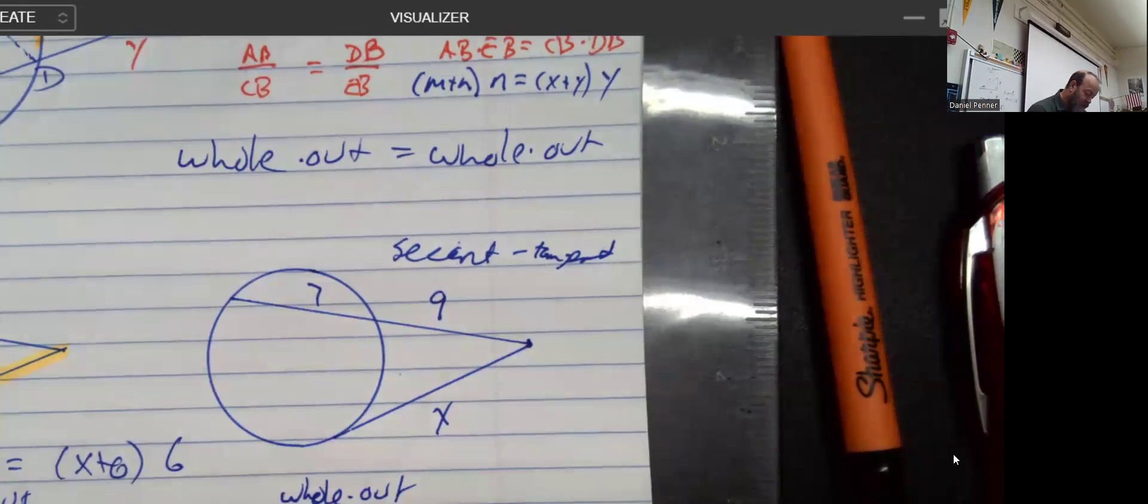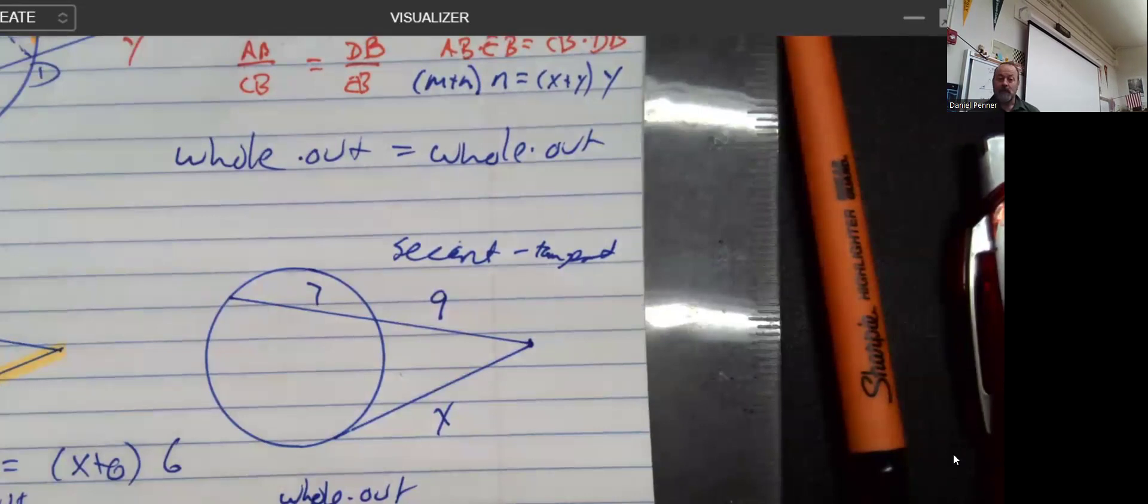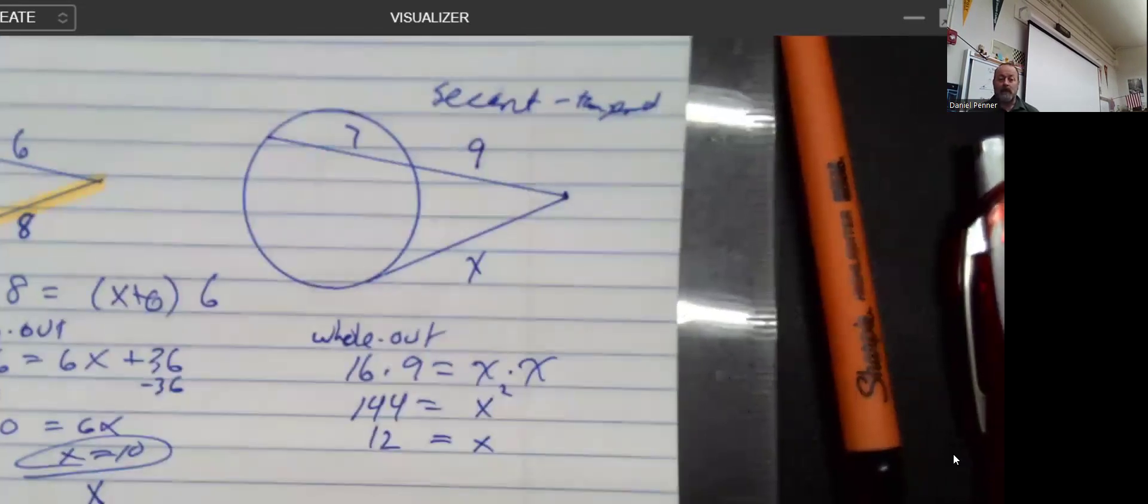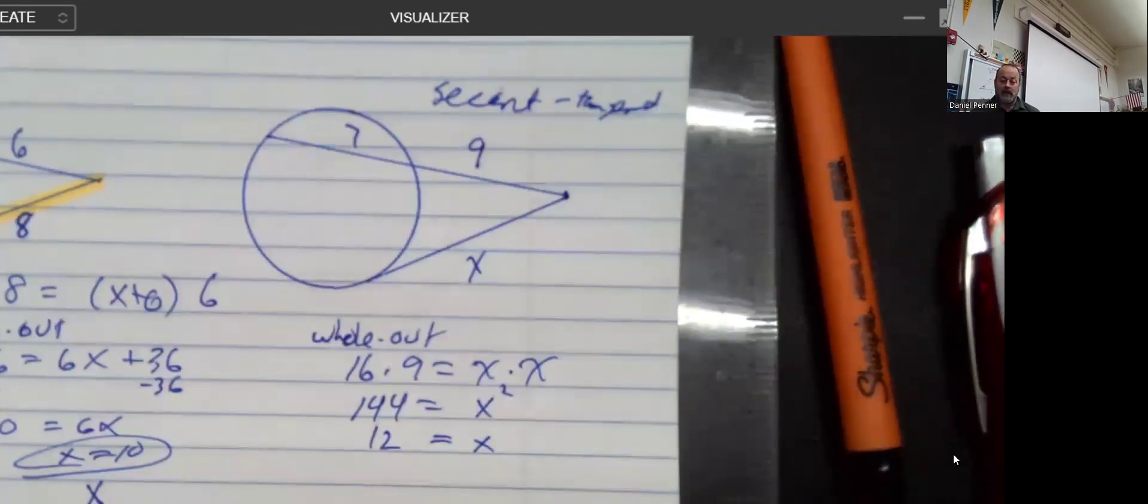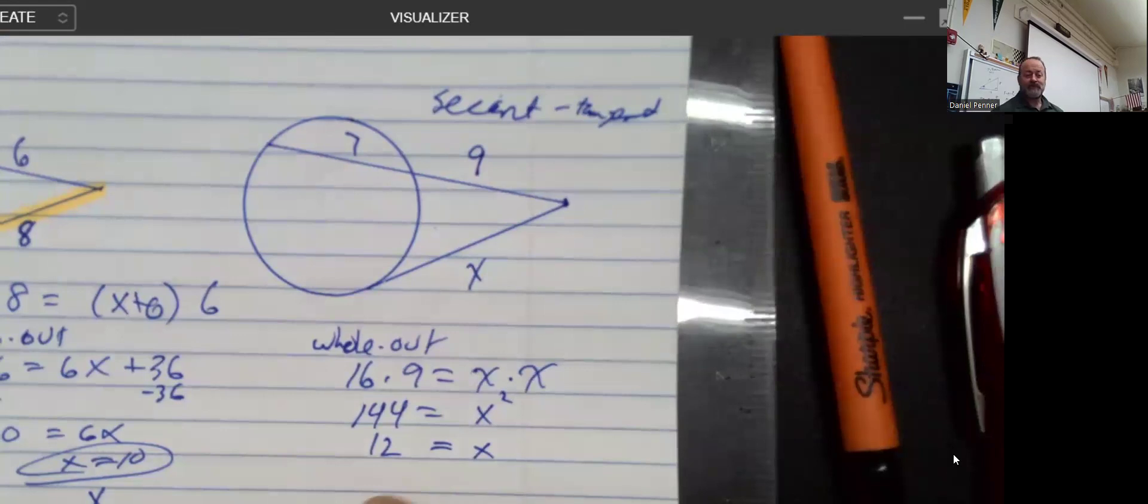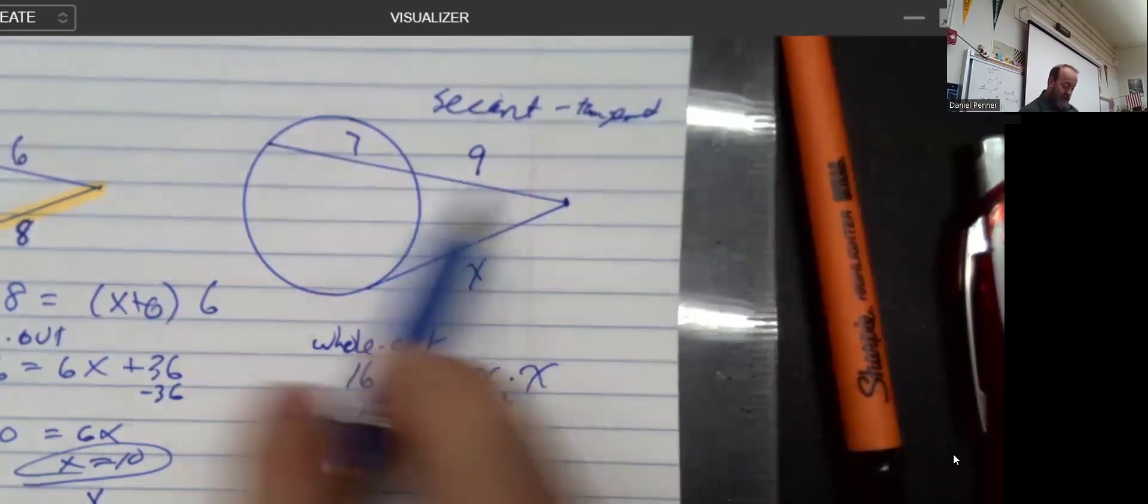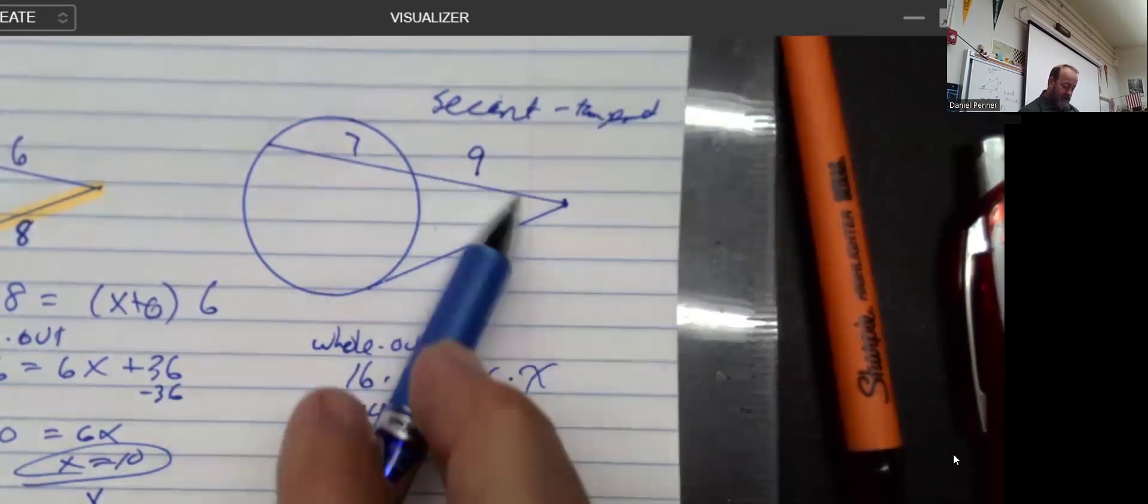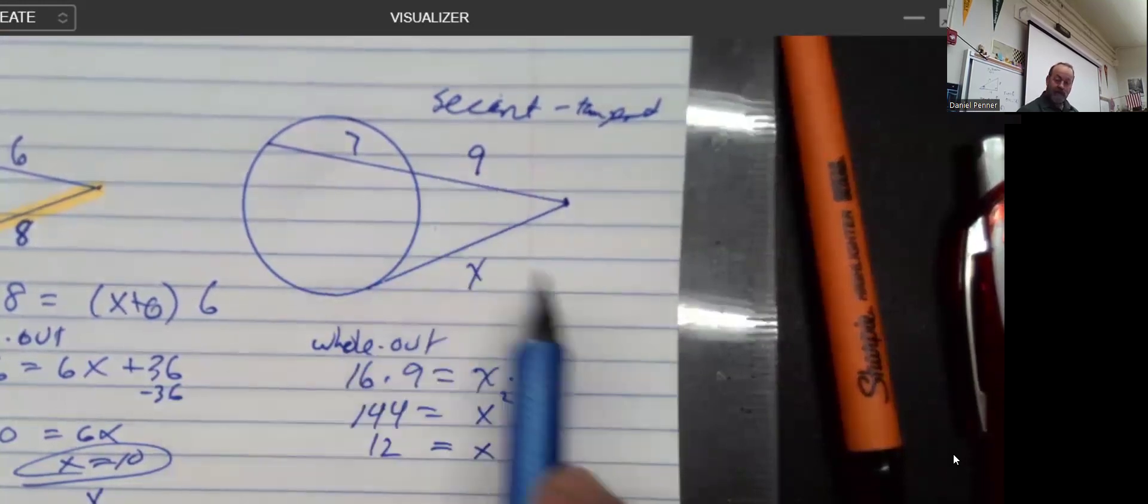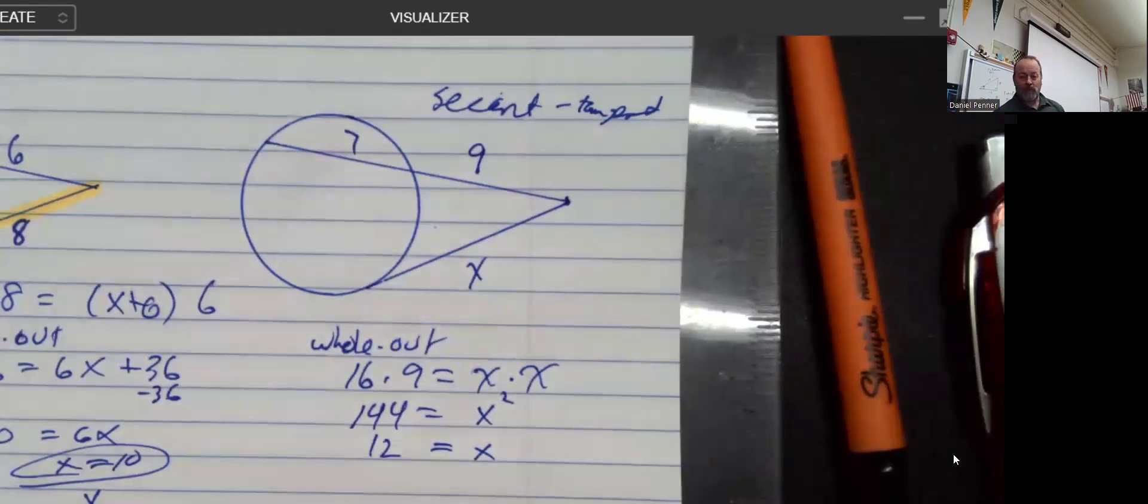So I end up with 144 equals X squared. You can kind of tell I probably rigged that problem. And I got that the whole thing, 16 times 9 is X times X, 144, that makes X 12. And you can see the whole thing is 144 right here. You got it. See, 16 times 9 is 144, and 12 times 12 is also 144. We're good.